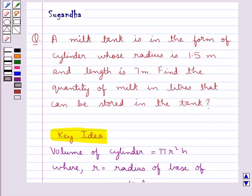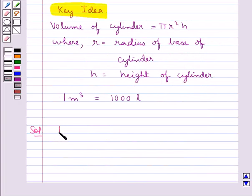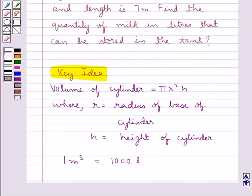Now let's see the solution. Since we are supposed to find the quantity of milk in liters that can be stored in the tank, we will find the volume of the tank. As the tank is in the form of cylinder, we will find the volume of cylinder.